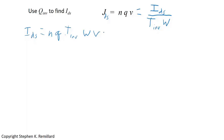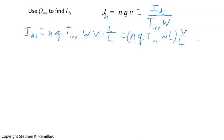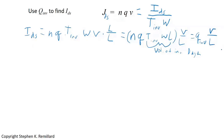Multiplying by L/L, we get I_DS = N * q * T_INV * W * L times (V/L). The volume T_INV * W * L is the volume of the inversion layer. Rewriting, this is q_i (the total charge in the inversion layer, in coulombs) times velocity over L. We then replace q_i with Q_inv (charge per unit area) times W*L, and cancel the L's.